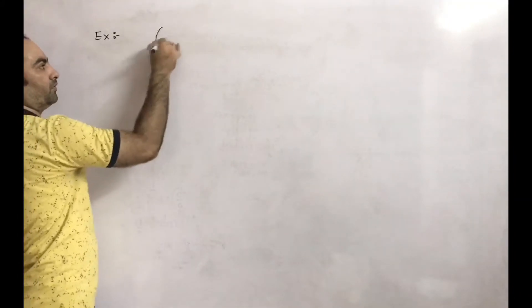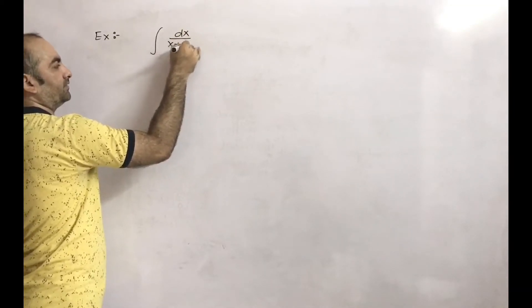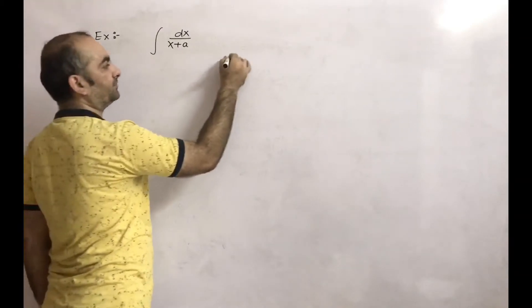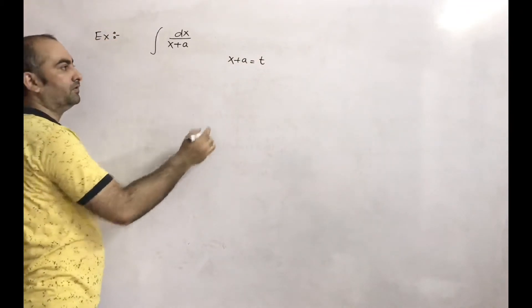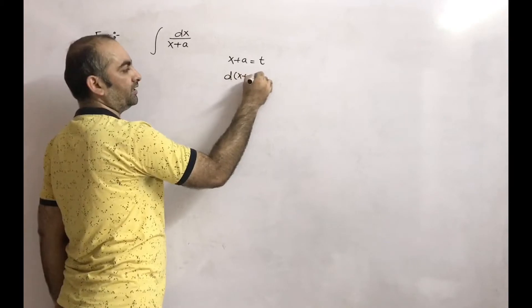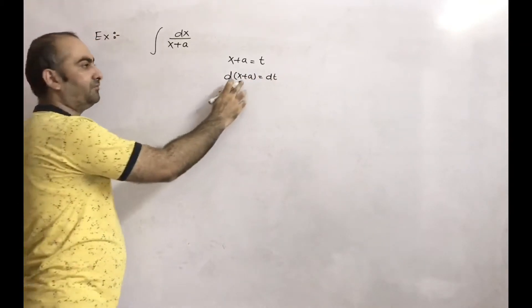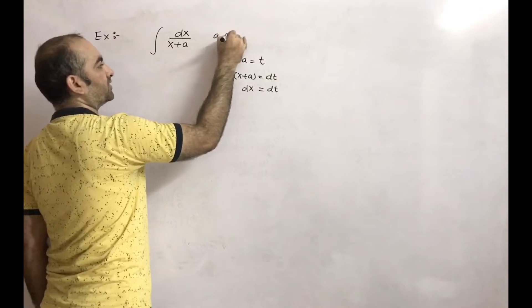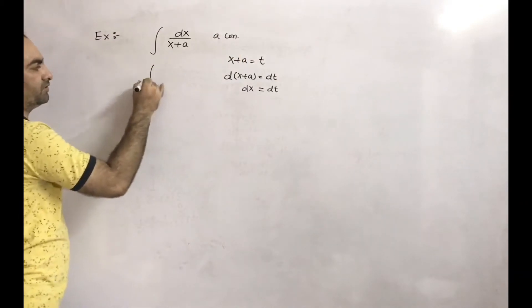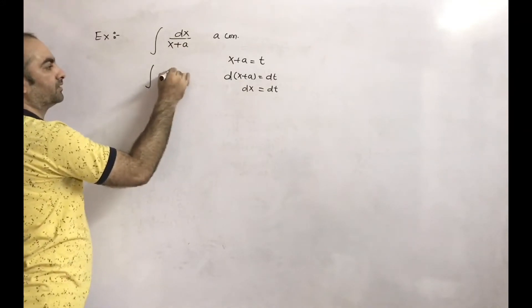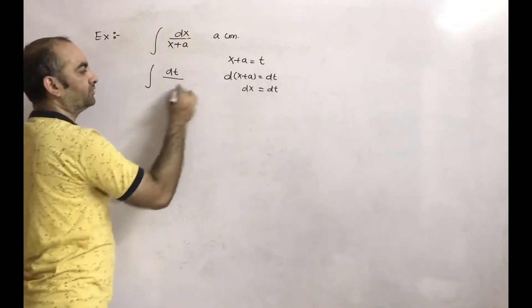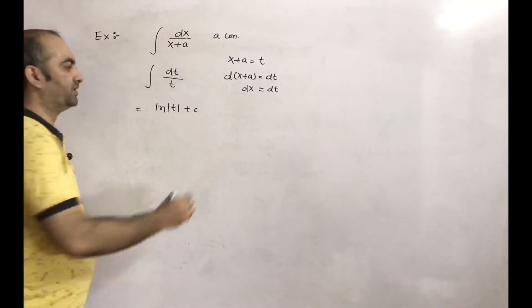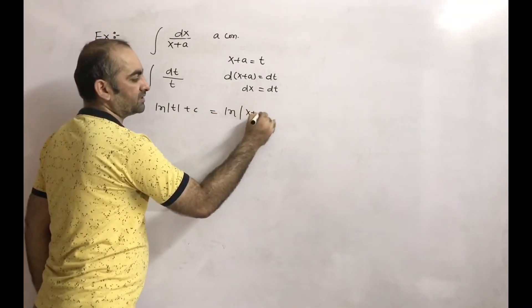Next, we are discussing integration of dx divided by (x+a). For simplification, take x+a as t, then differentiate: d(x+a) = dt. x differentiated gives dx, a differentiated gives 0 because a is constant. So dx = dt. This converts to integration of dt/t, which gives ln|t| plus c. Since t = x+a, the result is ln|x+a| plus c.